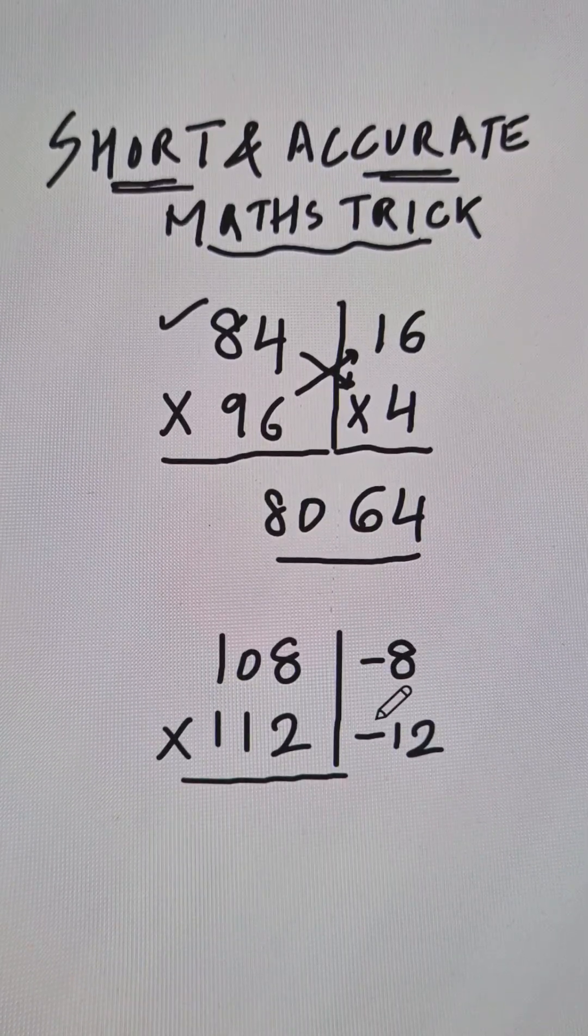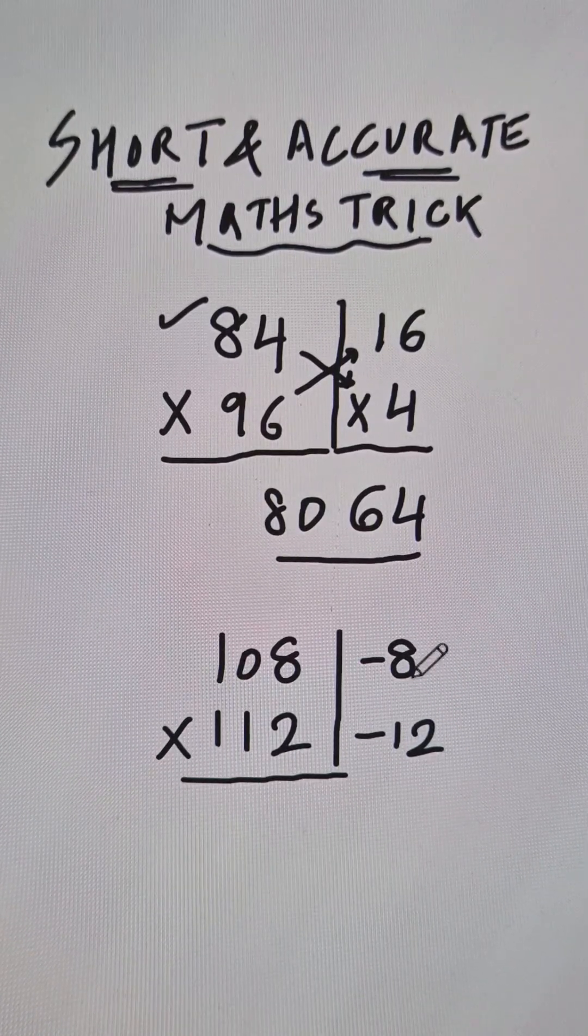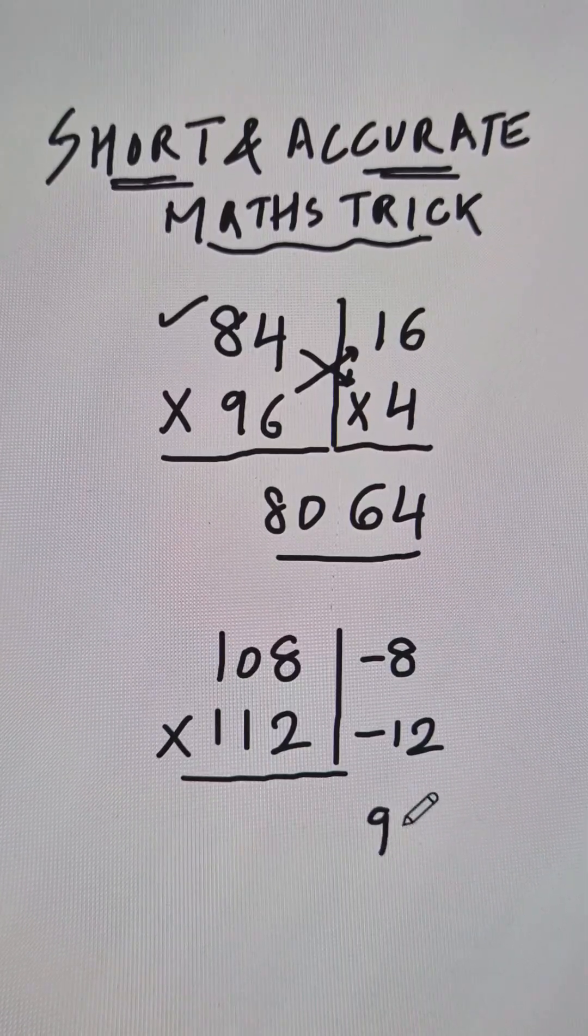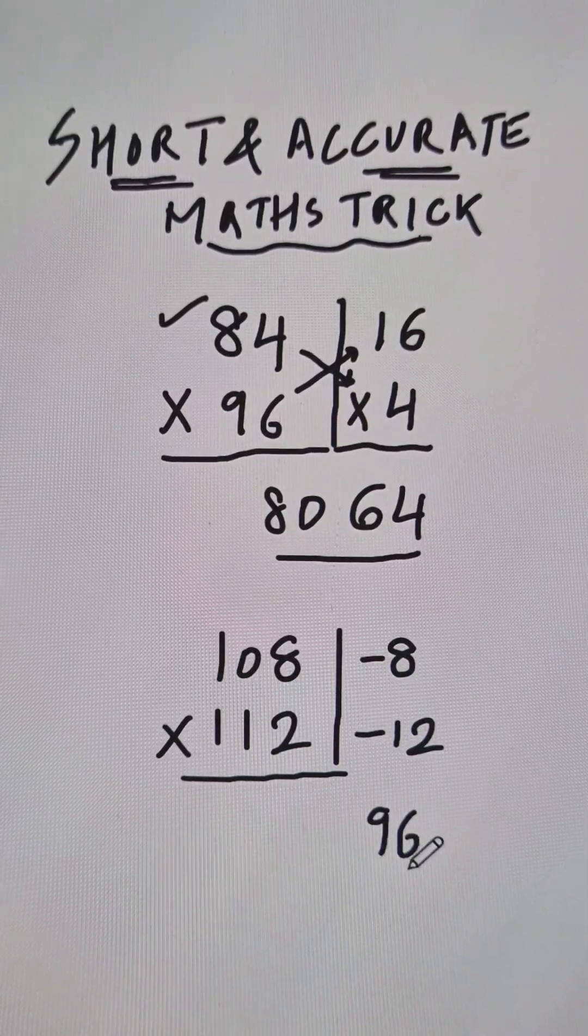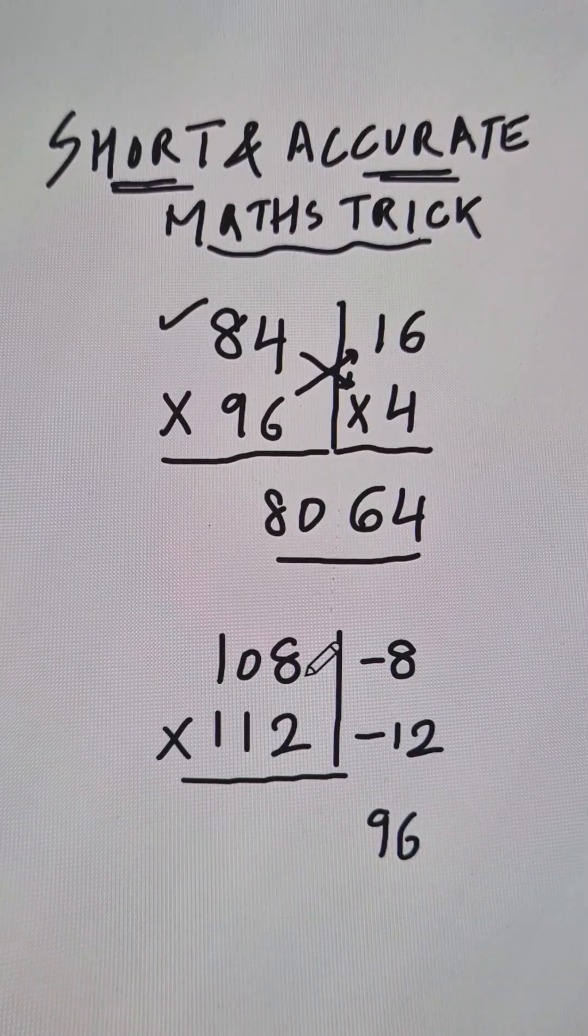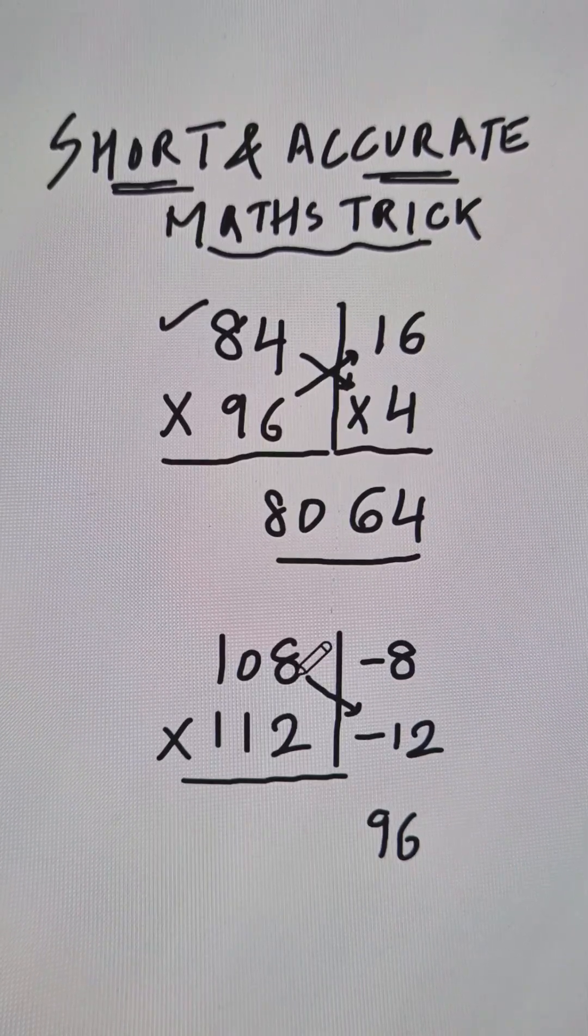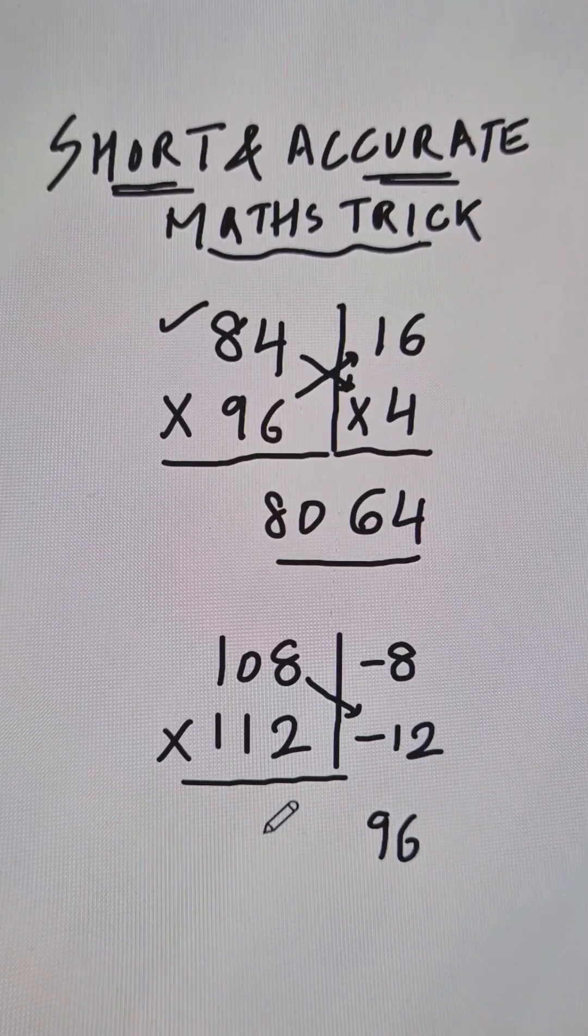Now negative and negative when you multiply them you get a positive number. 12 eights are 96, and therefore the last two digits of your answer is 96. Now when you subtract like this, 108 minus negative 12 becomes 120.